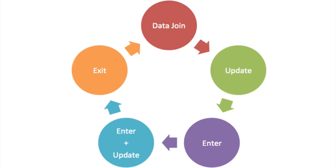The D3 update pattern is as follows. First, do a data join with the new data. Second, update the old elements as needed. Third, create new elements as needed. Fourth, if the third step appended elements to the enter selection, the update selection expands to include the enter selection so you can operate on both at the same time. Fifth and final, remove old elements as needed. Because we have the same number of existing elements as data elements, we won't have to deal with the enter and exit selections — we focus on the data join and updating attributes based on the new data.